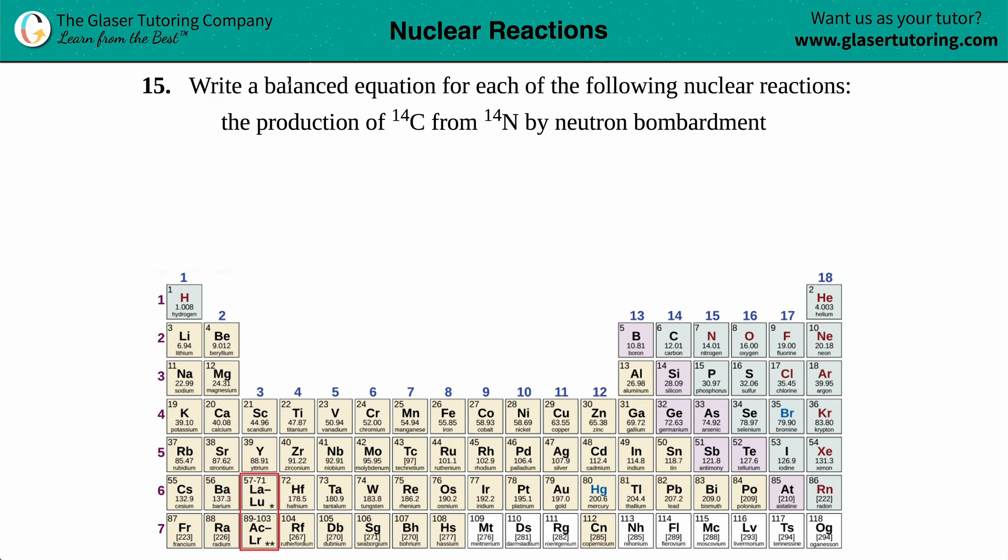Number 15, write a balanced equation for each of the following nuclear reactions, and then we have the production of C-14, that's radioactive, from N-14 by a neutron bombardment. Okay, so we're dealing with nuclear reactions.